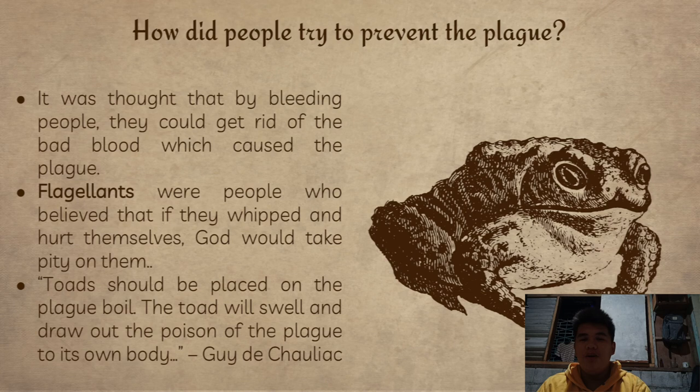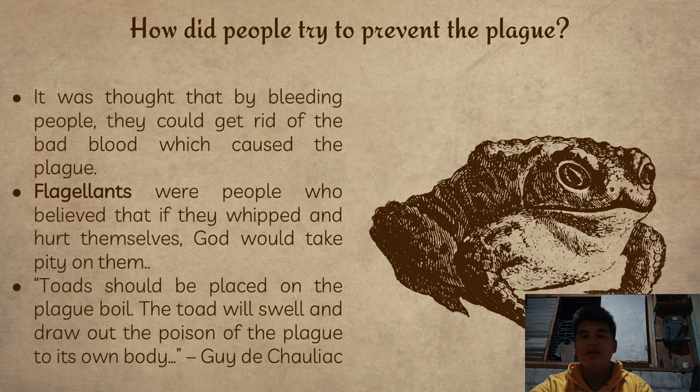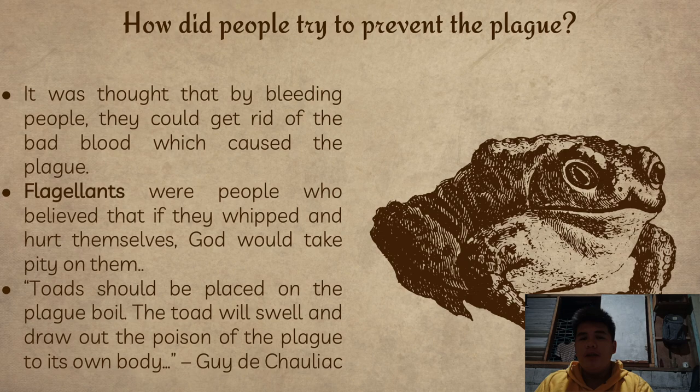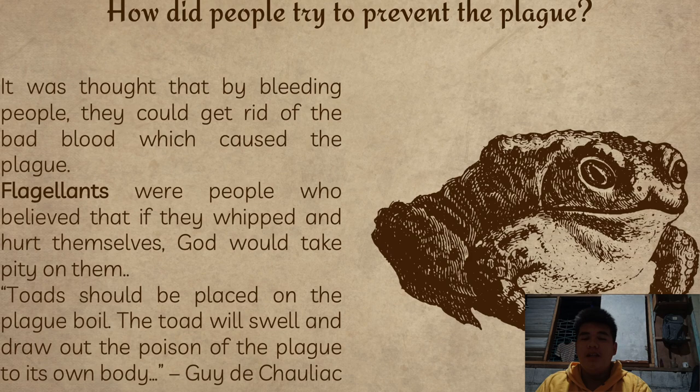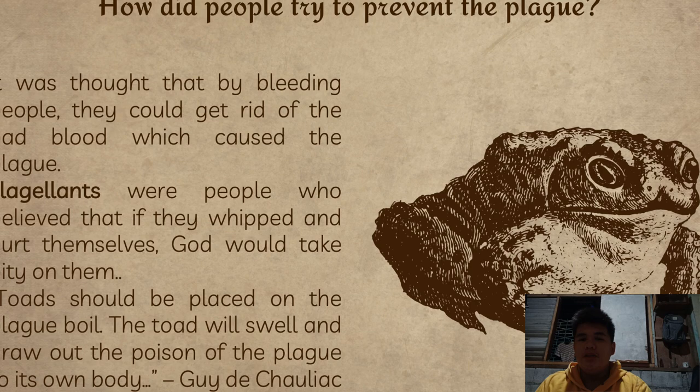How did people try to prevent the disease? One method was bloodletting — they believed that by bleeding people they could get rid of the bad blood which caused the plague. Others were flagellants who would whip and hurt themselves, believing God would take pity on them. Lastly, a toad would be placed on the plague boil — the toad would swell and draw all the poison of the plague into its own body.